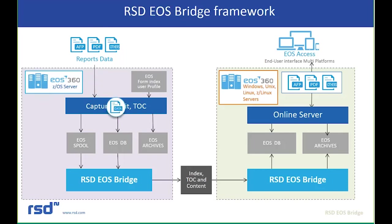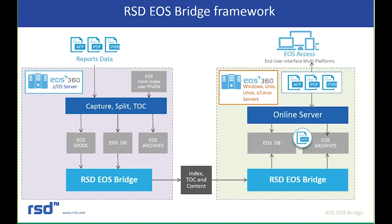With the Bridge added to the picture, we still capture, split, and index reports and process them through the EOS spool and databases. The Bridge now automatically takes that data — including indexes, table of contents, and report content — and moves it over into an EOS 360 environment running on Windows, Unix, or Linux. It processes through the database, can archive the reports, and users can then view their reports through EOS access, whether AFP, PDF, or regular line mode data streams. The difference is we're now capturing reports on the mainframe and moving them to an open systems environment for viewing.